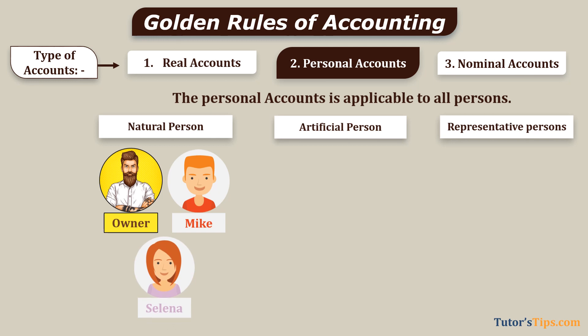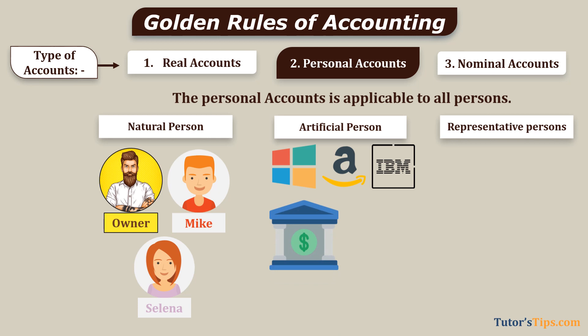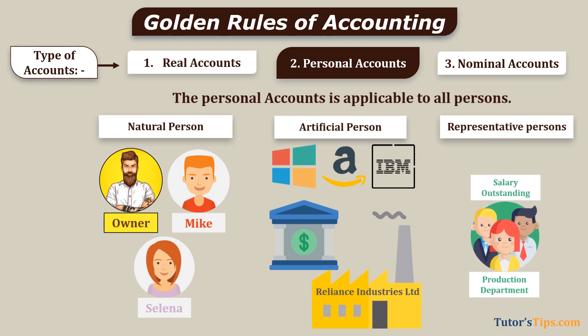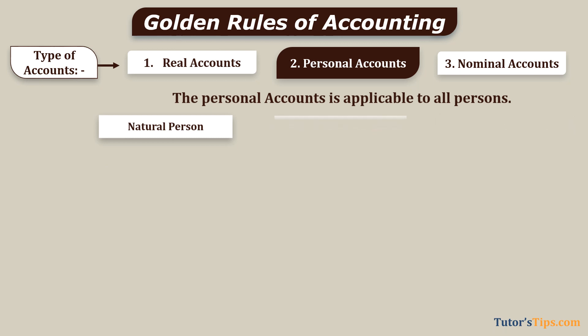Artificial persons mean persons created by law, like Microsoft, Amazon, IBM, bank accounts, Reliance Industries Limited, etc. Representative persons mean accounts which represent a person or group of persons, like outstanding salary, prepaid expenses, accrued income, pre-received income, etc.